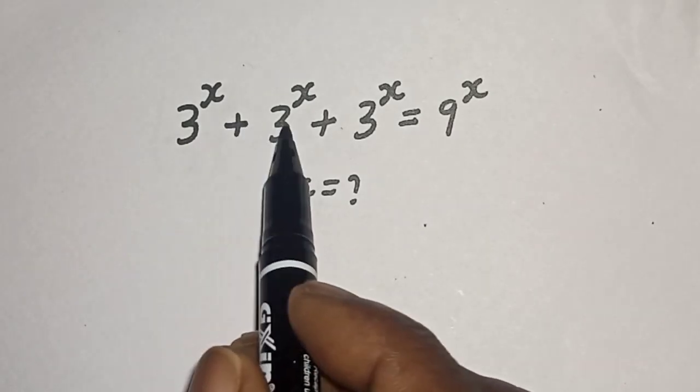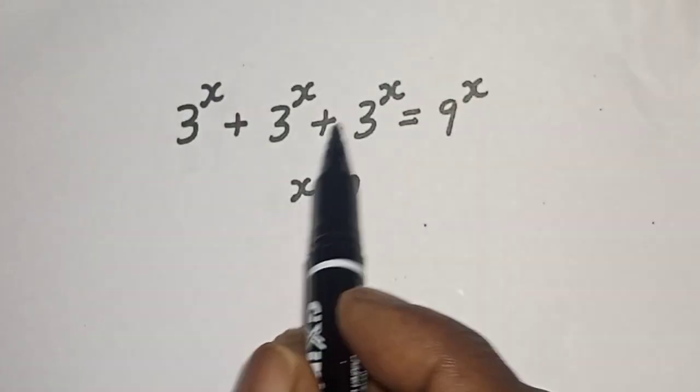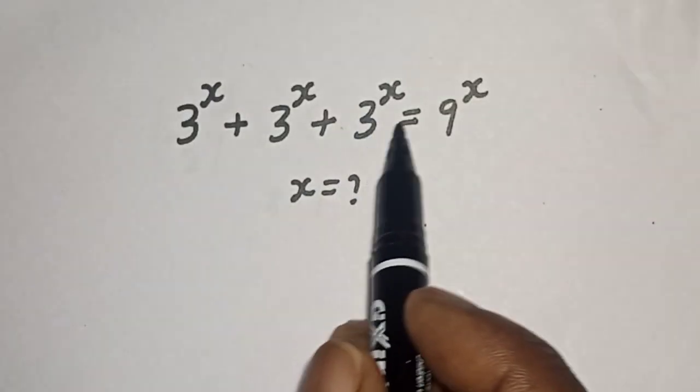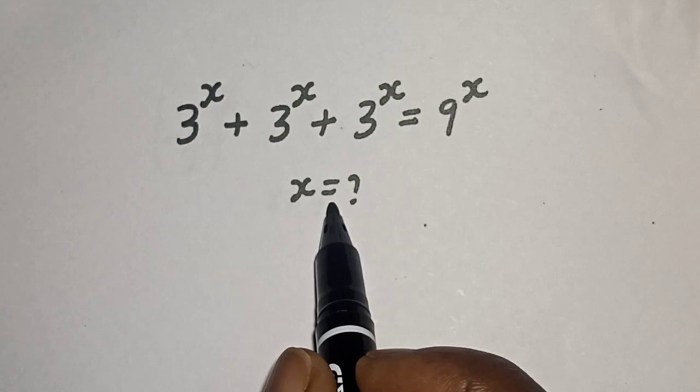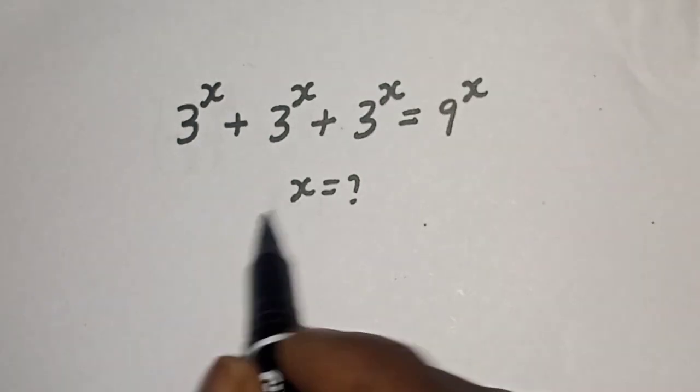3 raised to power s plus 3 raised to power s plus 3 raised to power s is equal to 9 raised to power s. What is the value of s?